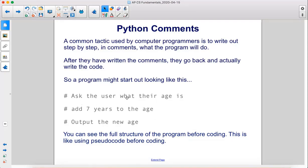Hashtag ask the user what their age is, hashtag add seven years to the age, hashtag output the new age. You can see the full structure of the program before coding. This is like using pseudocode before coding.